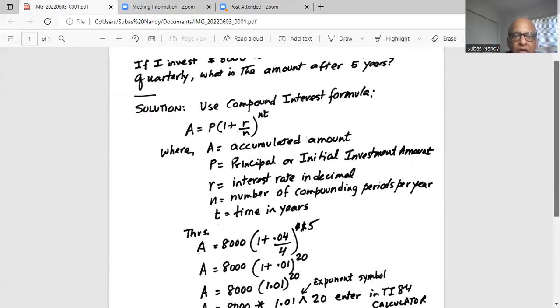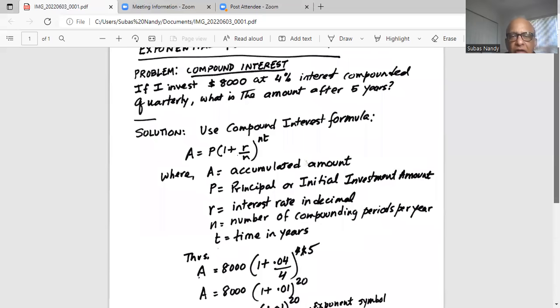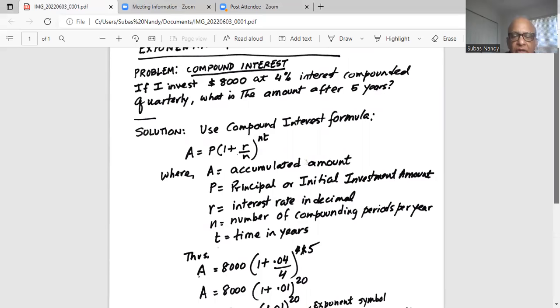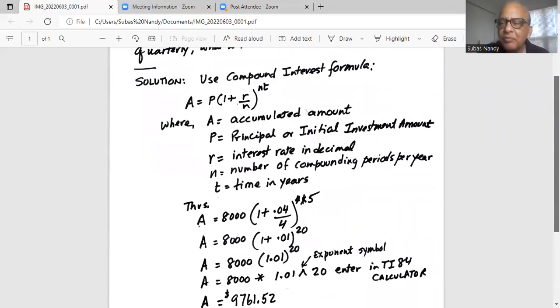This is the amount that I will get back after five years when $8,000 is invested at 4% interest compounded quarterly. So if you have any question, please write me a comment. Please like my channel because I come back every week to help you achieve success in math. That is my primary goal. So please subscribe to my channel. Please like my presentation and I will see you again next time with another problem. Take care and have a nice day.